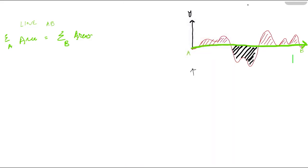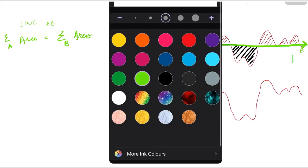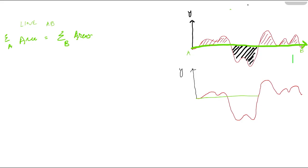Let me recreate this. Here we have the Y axis, and I'll create the surface again. Now I am going to create the datum line from A to B — this is A, this is B, and this is the X axis. Surface roughness can generally be characterized by two methods. Number one is the arithmetic mean method, which is called Ra.